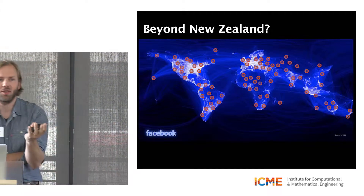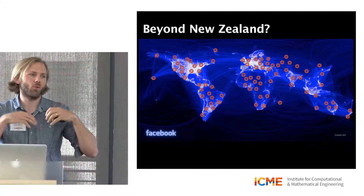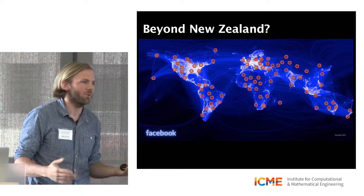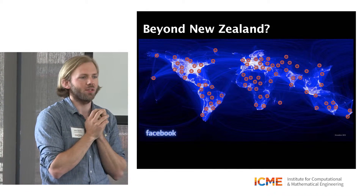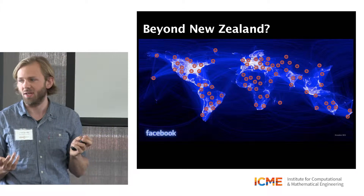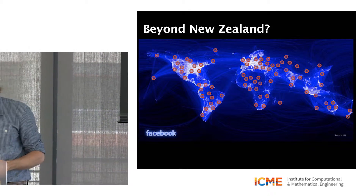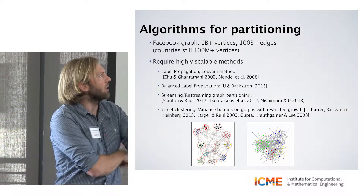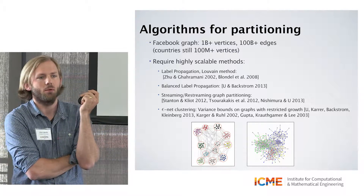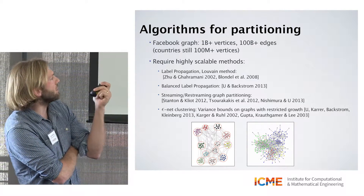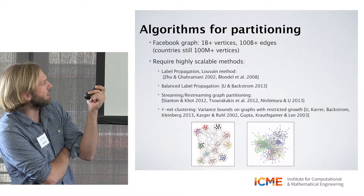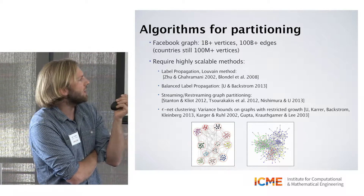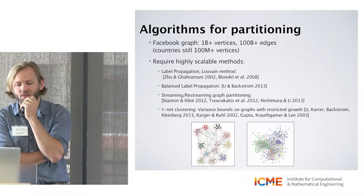How do we get beyond the New Zealand approach? Can we divide up graphs in a more principled manner than just picking countries, wrestling against the fact that New Zealand users use the website differently than other users? Can we view this as a large-scale graph partitioning problem? I've worked on this extensively, in collaboration with folks at Facebook, designing scalable methods for large-scale graph partitioning — including label propagation methods adapted to satisfy balanced constraints, streaming methods, and theory specifically for the experimentation problem.